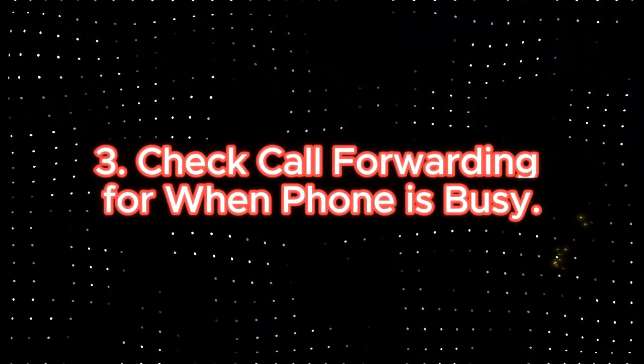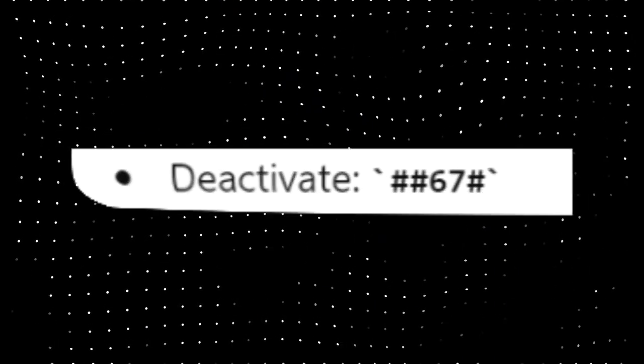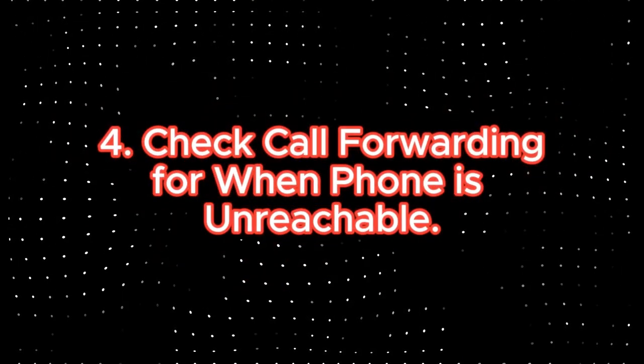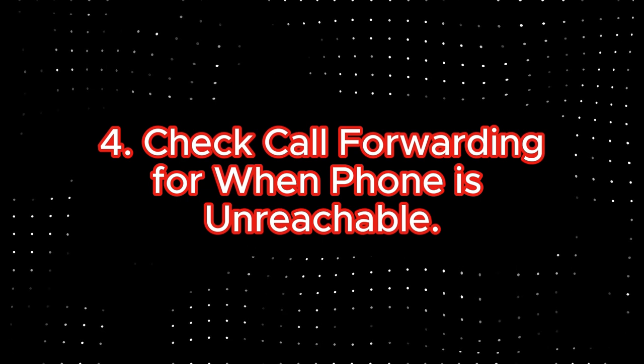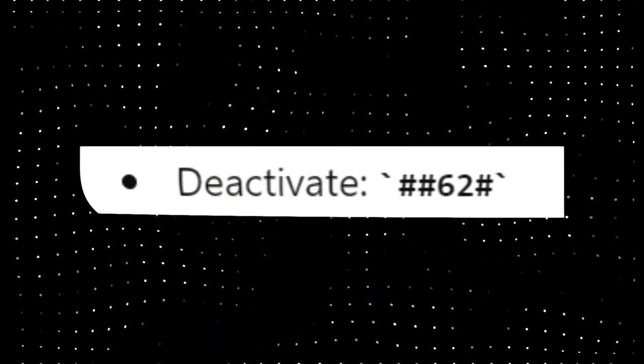To check if your calls have been forwarded when your phone is busy, press *#67# and to deactivate it press ##67#. To check if your calls have been forwarded when your phone is unreachable, press *#62# and to deactivate it press ##62#.